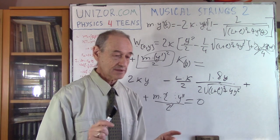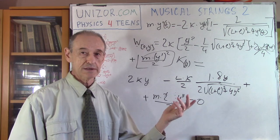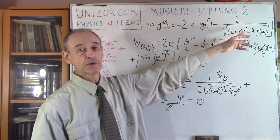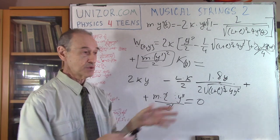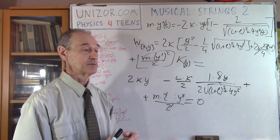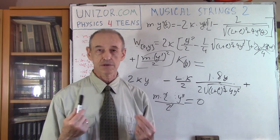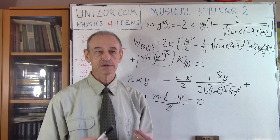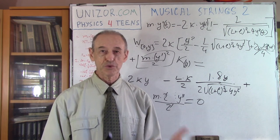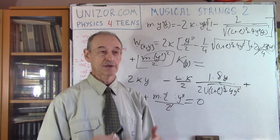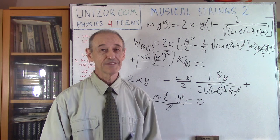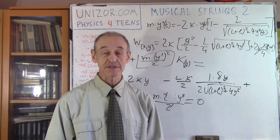My purpose was to show that we approached the same problem — a simplified musical string model — from two completely different positions: one using Newton's law, another using the law of conservation of energy, and we came up with two different differential equations that can be reduced to each other. This is something you should always try: if you have a problem and don't have the answer, solve it from two different approaches. If you get the same result, you can be sure your answer is correct.